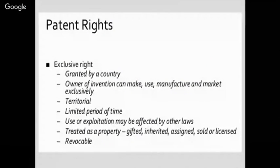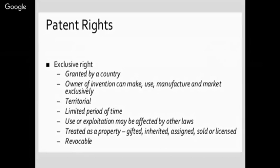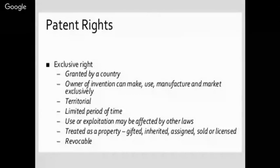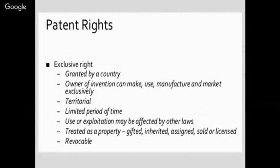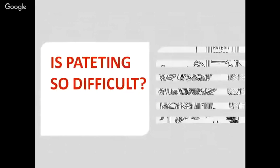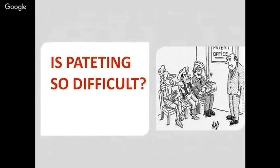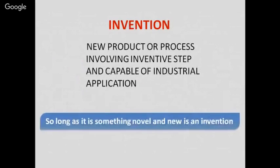To conclude the patent rights section: they are exclusive rights granted by a country. The owner of the invention can make, manufacture, and market exclusively. It is based on a particular territory, for a limited period of 20 years, and can be used or exploited. It can be affected by other laws of that nation, and is treated as property which can be gifted, inherited, assigned, sold, or licensed, and can be revocable.